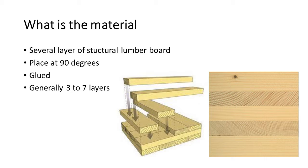CLT panels are usually fabricated with three to seven layers, and even more in some cases. Panel size varies by manufacturer. Typical widths range from 2 feet to 4 feet, and can sometimes go up to 16.5 feet. For length, panels can be up to 60 feet.